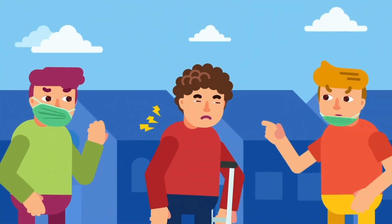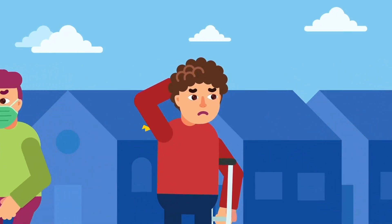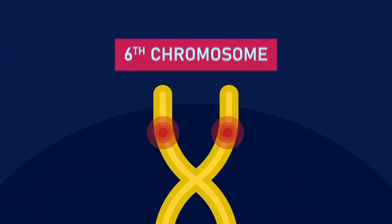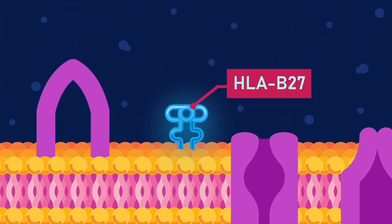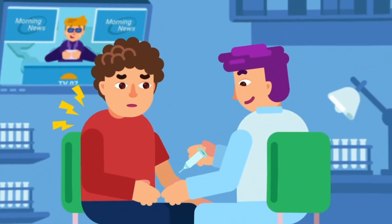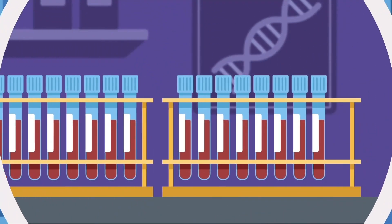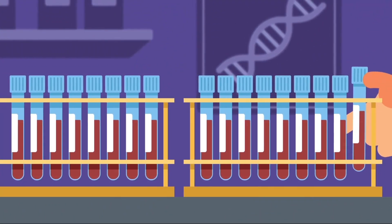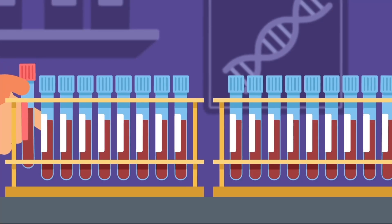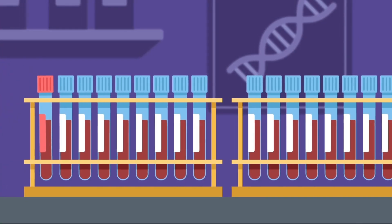Please note that ankylosing spondylitis is not contagious. A gene called HLA-B27 is present in people with ankylosing spondylitis and can be detected by a blood test. However, this gene doesn't mean you'll definitely get ankylosing spondylitis. Only 1 in 18 people with the gene will actually develop the condition.